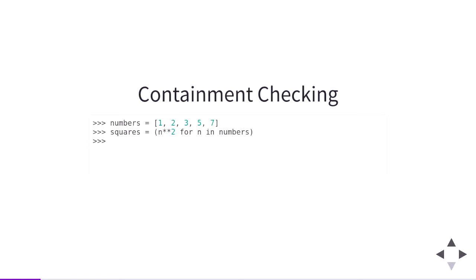We're also going to talk about what's going on here. When we ask nine in squares, we get true. When we ask nine in squares again, Python decides it's false. Nine is not in squares. We ask the same question two times of this object and we get a different answer.